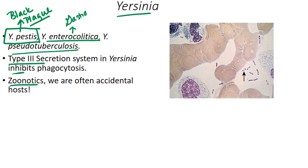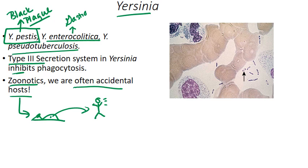Yersinia is a zoonotic organism, and that's really important — we are often accidental hosts. That's pretty much what led to the Black Plague: it wasn't so much person-to-person spread, although that can happen. Basically, the fleas of rats were jumping onto us and biting us, and then we were getting sick. It does have its own life cycle and is also playing a role ecologically. Various mammals are actually in danger of extinction because of Black Plague — specifically, the black-tailed prairie dog and the endangered black-footed ferret are under threat as a result of Yersinia pestis.